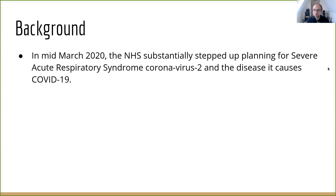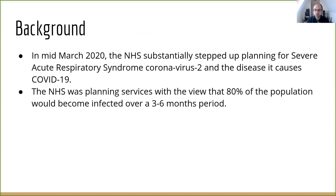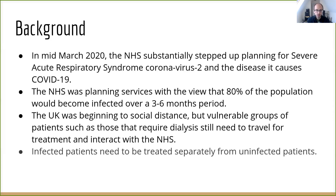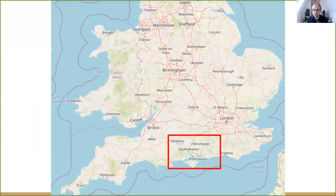Right at the start just before lockdown, the NHS substantially stepped up their planning. The reasonable worst case scenario at that time was that 80% of the population would become infected over three to six months. For dialysis patients, social distancing isn't possible because they still need to travel into outpatient clinics and interact with the NHS on a regular basis. This project was about separation — how do you keep infected patients separate from uninfected patients and still manage everything within the capacity you have? This was with the Wessex Kidney Centre, working in Hampshire, with a network of dialysis facilities and about 650 patients.